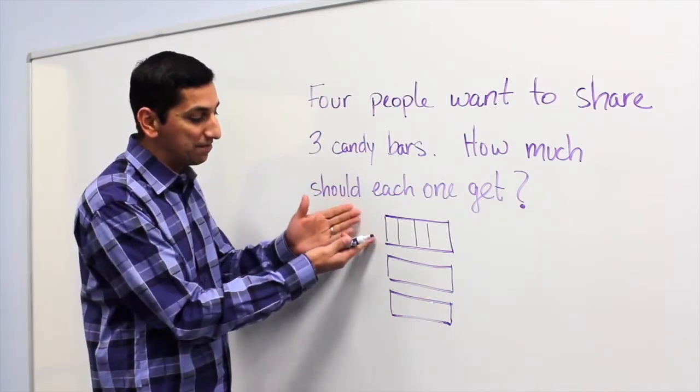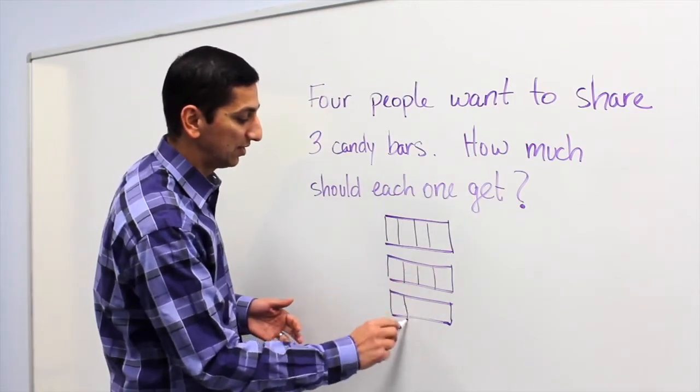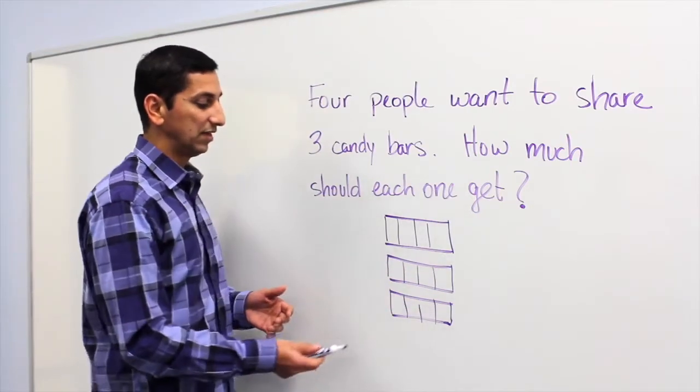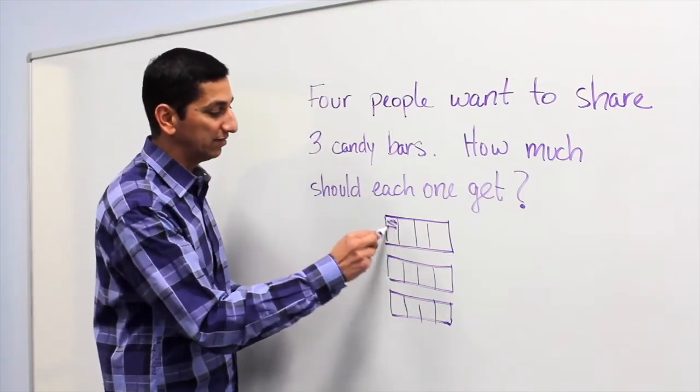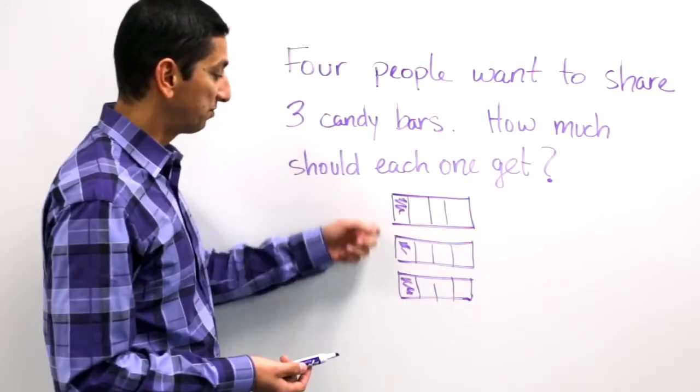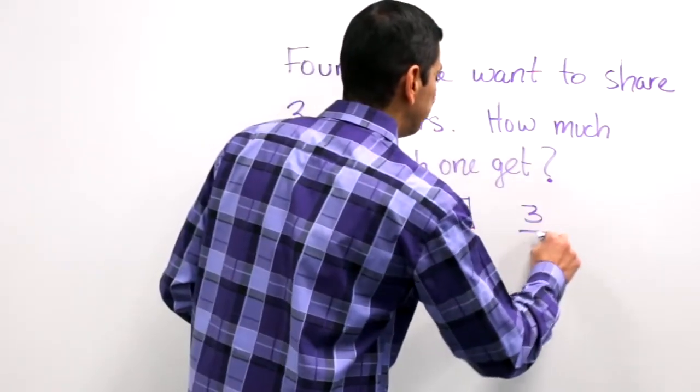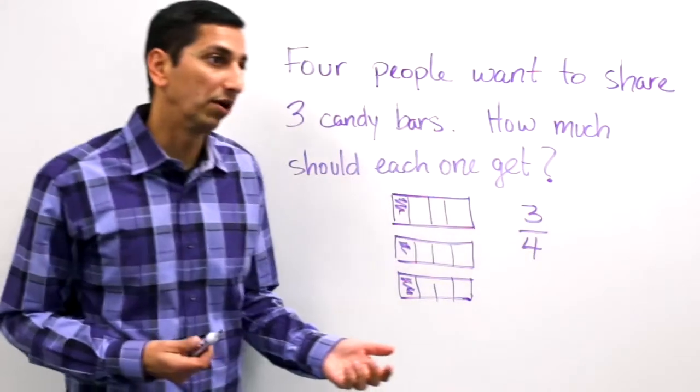They might say, well look, I can do the same thing to the other two candy bars. So I can divide them each into fourths and then each person would get a piece of each of them. Well, a fourth plus a fourth plus a fourth, that's three fourths. So I get the answer. Three fourths of a candy bar.